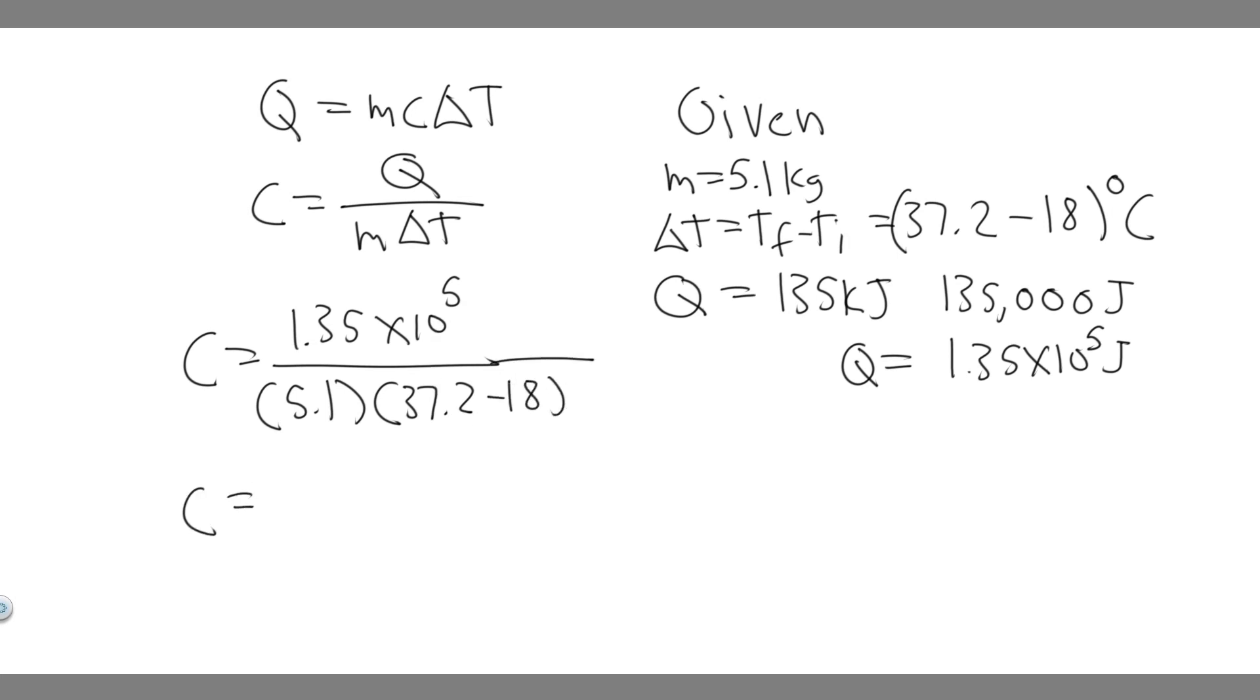Go ahead and do this. You need to do 1.35 times 10 to the 5, and then divide by 5.1 times 37.2 minus 18. So when you go ahead and do this, you're going to get C equals 1378.67.